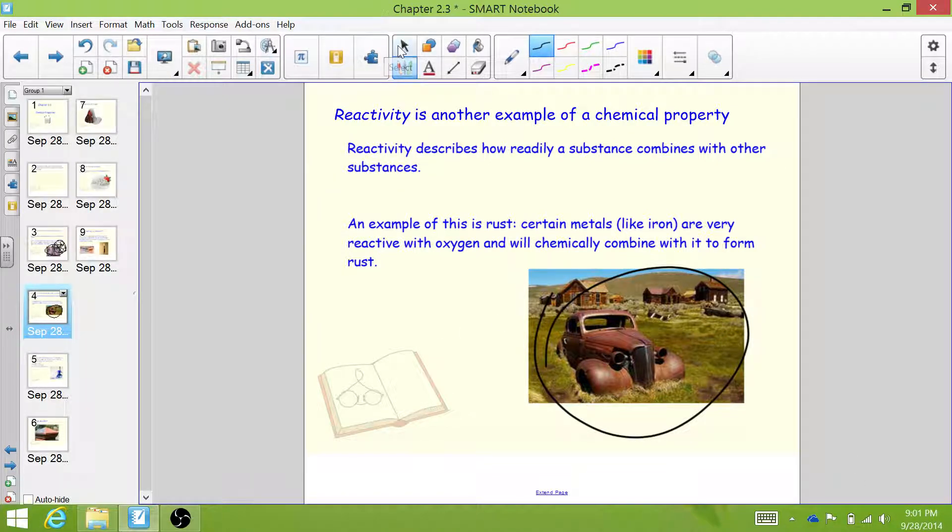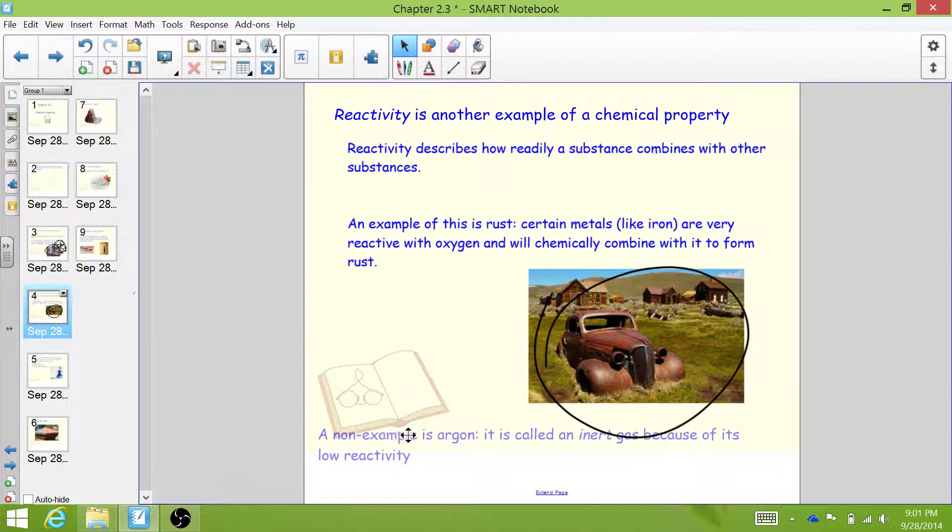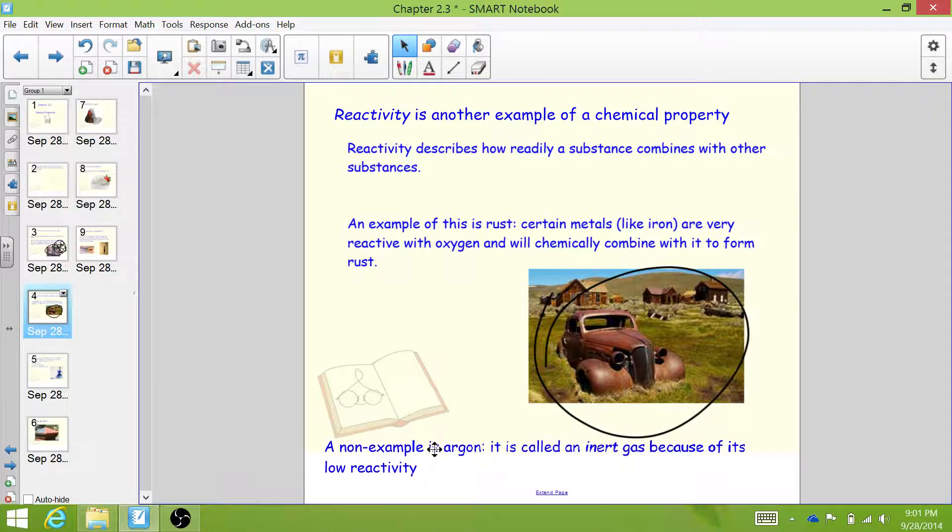Certain metals will react with oxygen better, and this depends on their reactivity. A non-example of reactivity is the element argon. Argon is called an inert gas because its reactivity is so low that scientists say it doesn't react with anything. It turns out that argon is used in light bulbs, and that's because as the electricity passes through the little wire in the light bulb and it gets hot, it will not burn because argon will not react with it like oxygen would.